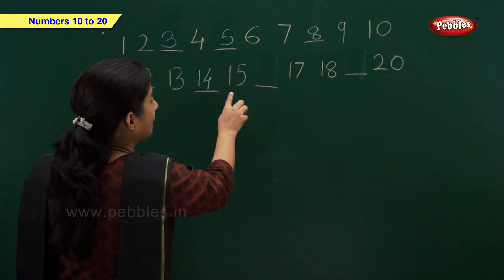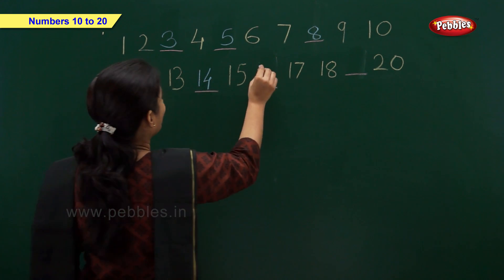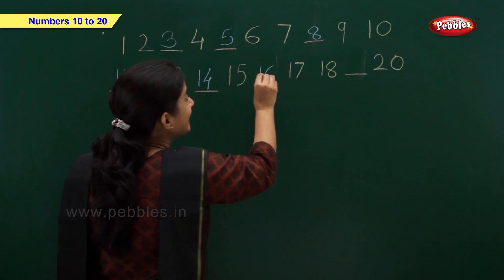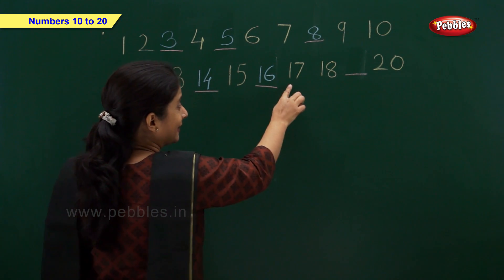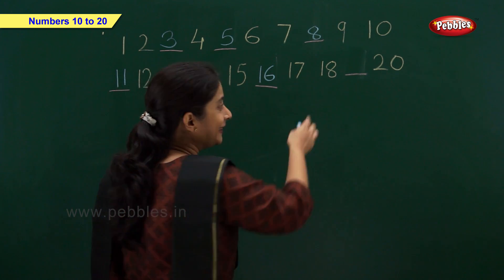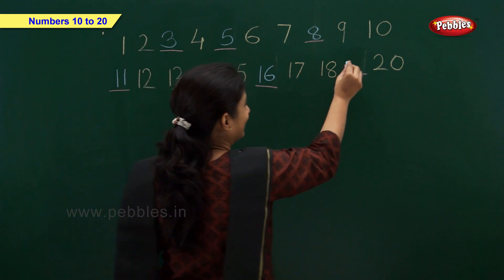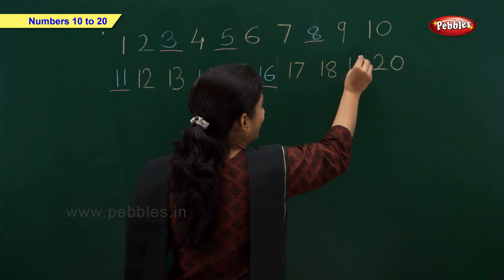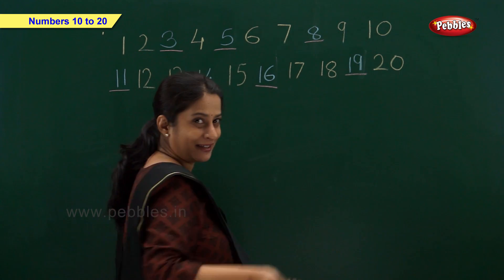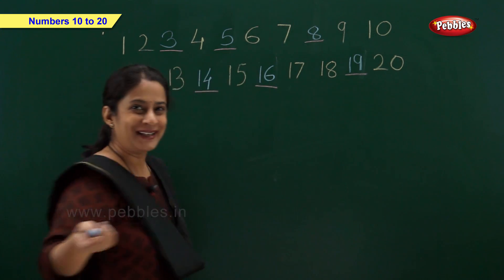15, 16, 17, 18, and now 19. And after 19 — 2 and 0, 20!